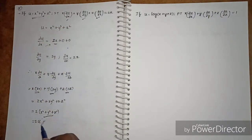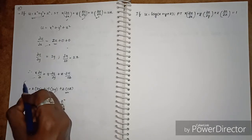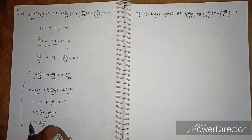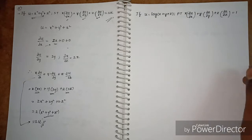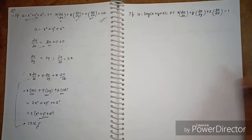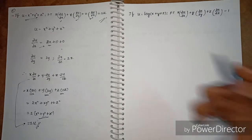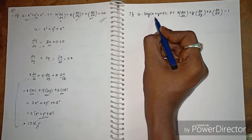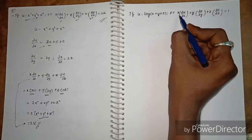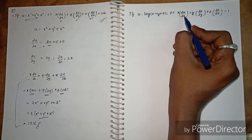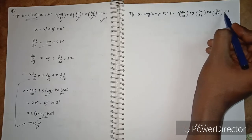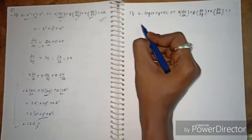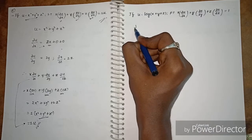Hence proved. Now the next question: if u is equal to log of (x + y + z), prove that x·∂u/∂x + y·∂u/∂y + z·∂u/∂z is equal to 1. First we'll find ∂u/∂x.